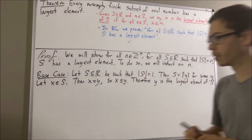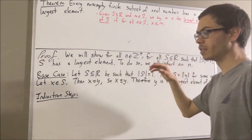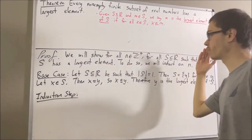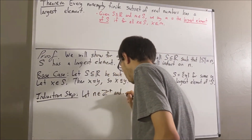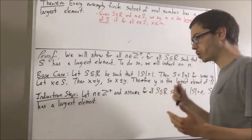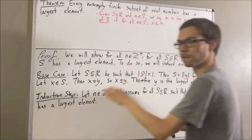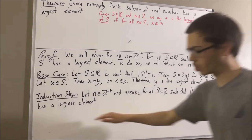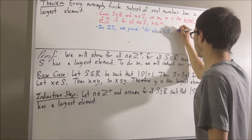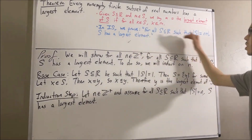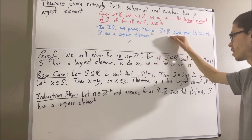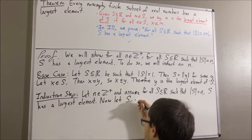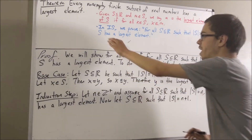Now let's move on to the induction step. In the induction step, we give ourselves an arbitrary positive integer where this is true. So let n be a positive integer and suppose that this is true. The whole goal of the induction step is to prove that this is also true for n plus one — that is, for all subsets of real numbers with n plus one elements, s has a largest element. Since we're trying to prove a statement about every subset of real numbers with n plus one elements, give me an arbitrary such subset — I'll call it s. Our goal is to show that s has a largest element.